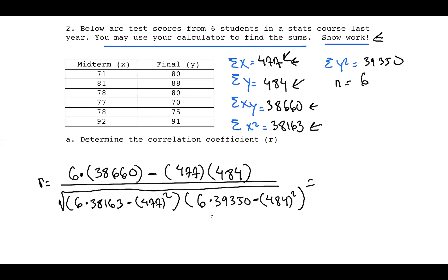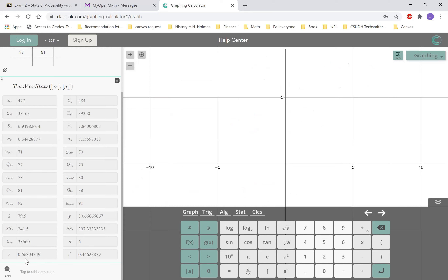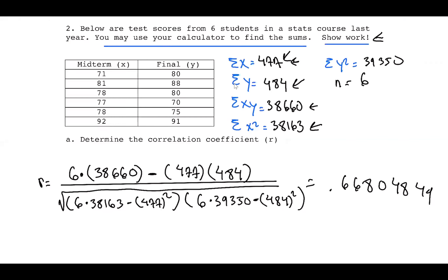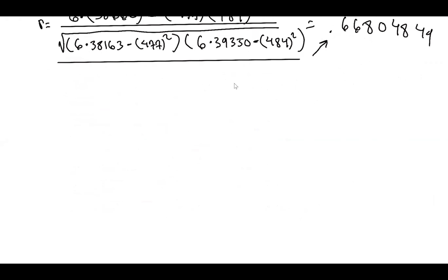Once you've written the substitution, go back to ClassCalc — at the bottom where it says r, it already gives you the answer. Set r = 0.66804849. Just go directly from writing the formula to putting the value for r. If the problem says 'show your work,' you must write the formula. That's it for part A.